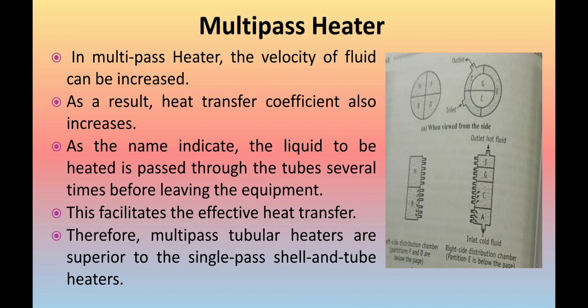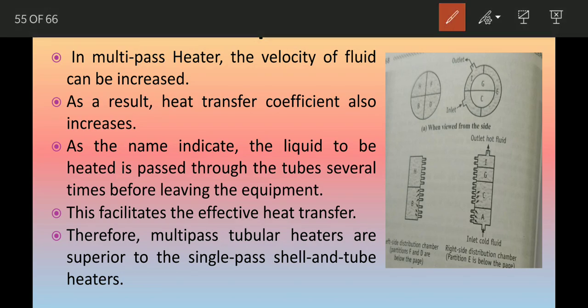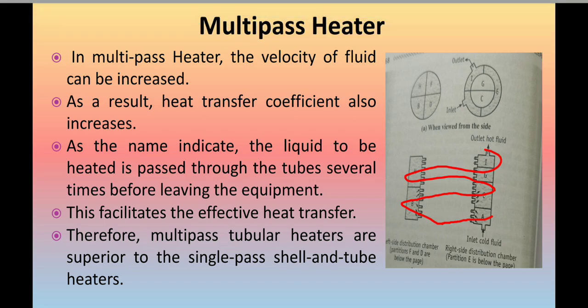Since the heater is multipass, the same liquid has to flow through several tubes back and forth. As you can see here, the liquid flows from A to B to C, D, E, F, and so on — passing through the tubes multiple times in this manner.